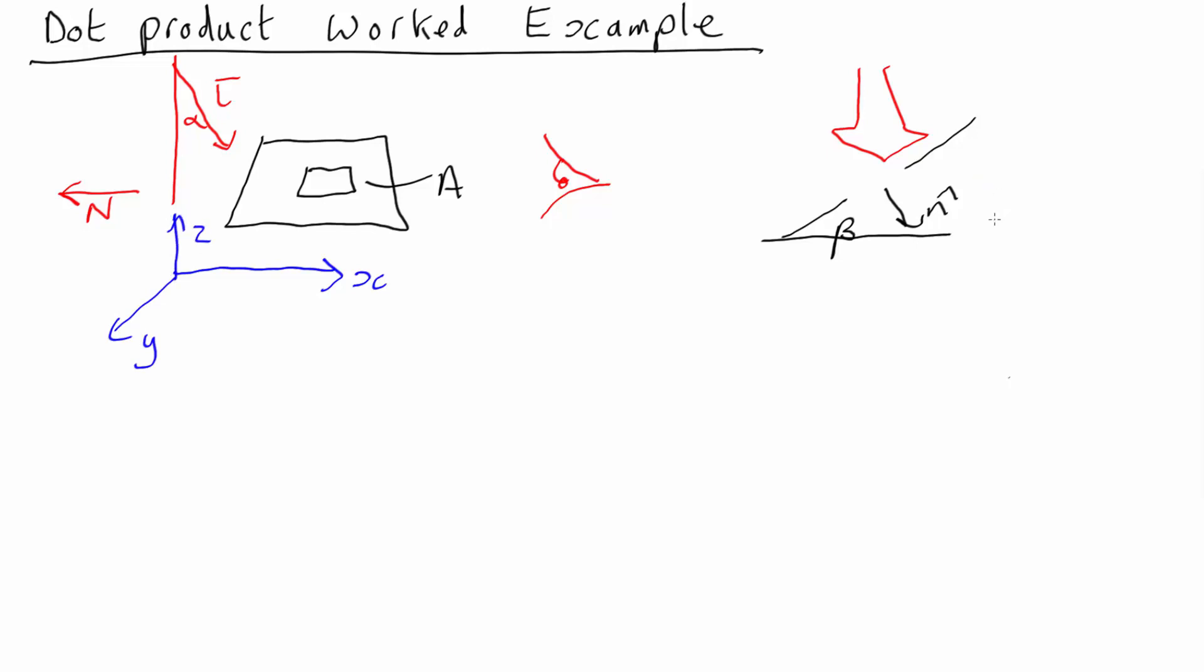So in this diagram, what we've got is x coming out of the screen, we've got y in that direction, and we've got z vertical again.